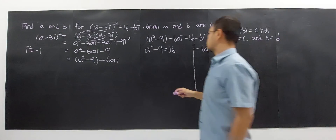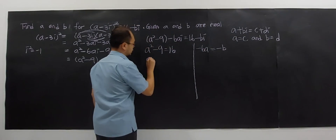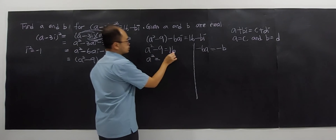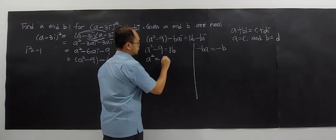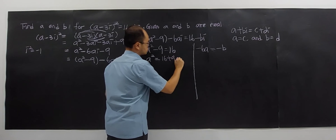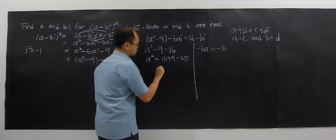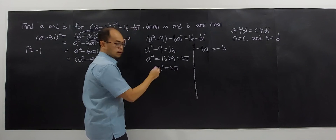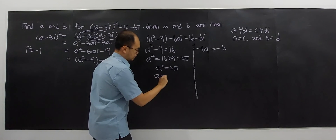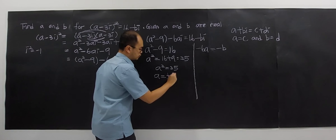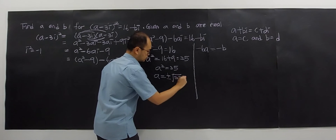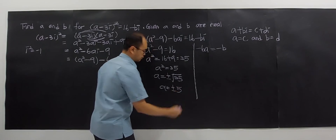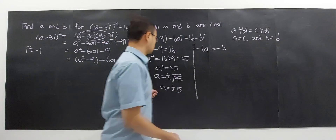Solving for A: A squared equals 16 plus 9, which is 25. So A squared equals 25, giving A equals positive or negative 5. You have two solutions here. Definitely if you have two solutions for A, you will have two solutions for B as well.